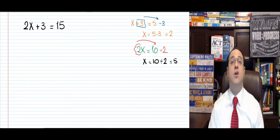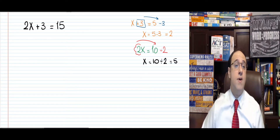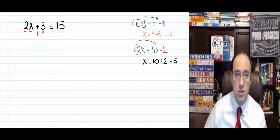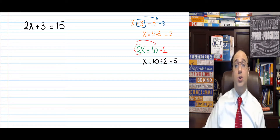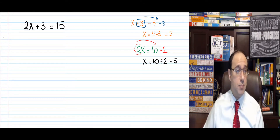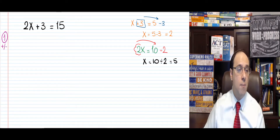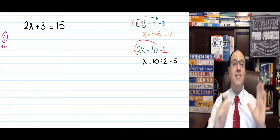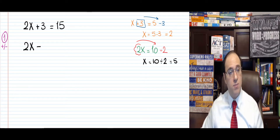How is the question on the left different from these two? It's different because here we have something multiplied by x and we have something added to that x, so it's actually combining the two concepts we learned before. How do we do this? It's very simple. First step: you need to get rid of the pluses or minuses. So 2x means 2 times x, so we just leave 2x as it is — we want to find out what 2x by itself equals.